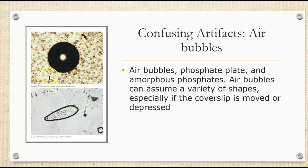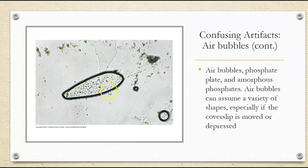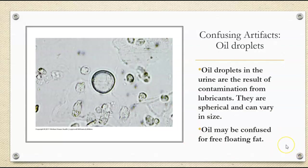Air bubbles — here are some air bubbles. In the background is amorphous phosphates, and we'll talk more about crystals in the crystals lecture. Air bubbles can have a variety of shapes, but they're very characteristic about the heavy black outline. Here's a slightly closer view — there are three air bubbles in this image. Oil droplets in the urine are the result of contamination from lubricants — they're spherical and can vary in size. Oil can also be confused for free-floating fat droplets.